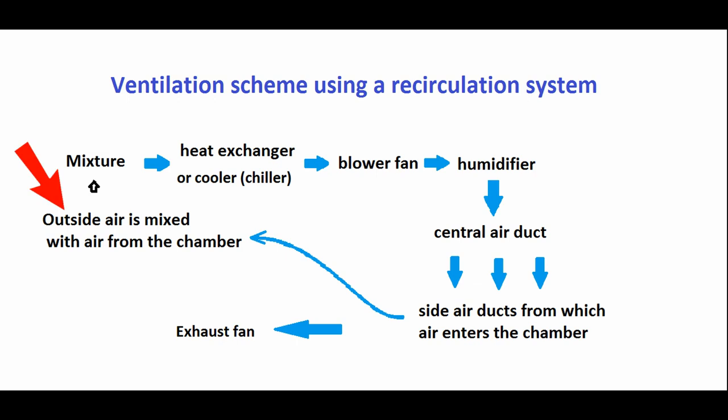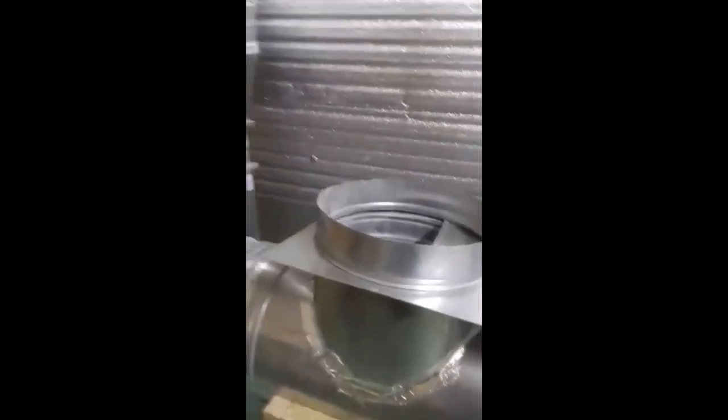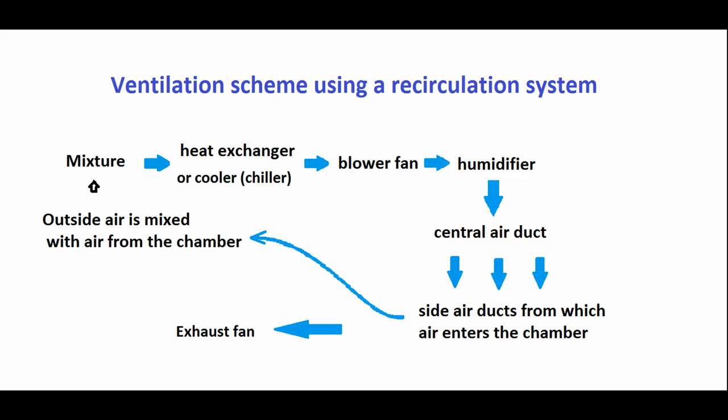First we need to mix the outside air with the air from the grow room. Pipes and dampers are used to mix the air. The dampers regulate the amount of air that comes in from outside. The ventilation system that uses the internal air of the chamber is called recirculation, and the air itself is called internal or recirculated air.